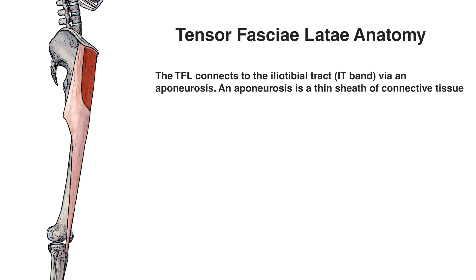The TFL connects onto the tibia, which is why the IT band is so important in its relationship with the TFL. Without the IT band, the TFL wouldn't have anything to connect onto, it wouldn't be able to pass the knee, and it wouldn't be able to connect onto the tibia. So think of the IT band as an extended tendon for the TFL to connect all the way down to the tibia.